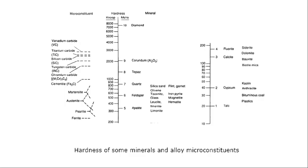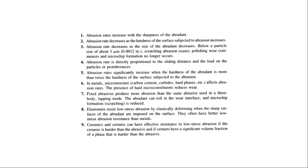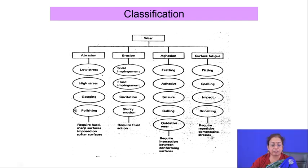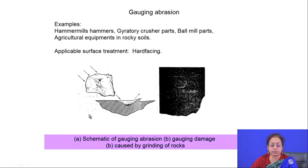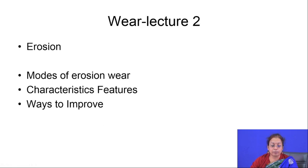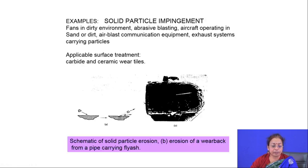Looking at the different erosion phenomena and their classification, we will see that erosion can be divided into four sub-categories: solid particle impingement, fluid impingement, cavitation erosion, and slurry erosion. Let's quickly go to solid particle impingement.